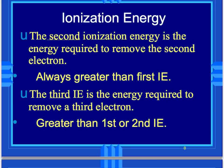The second ionization energy is the energy required to remove the second electron, and it's always greater than the first ionization energy. For lithium, to remove the second electron requires a lot more energy because the atom doesn't want to give it up — it wants a full valence shell. The third ionization energy is always greater than the first or second.